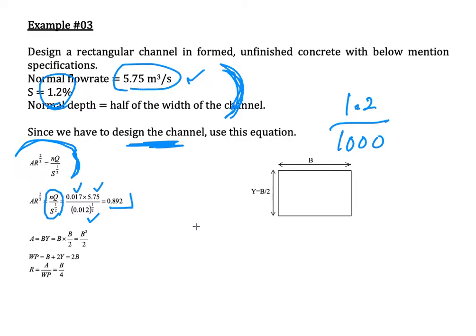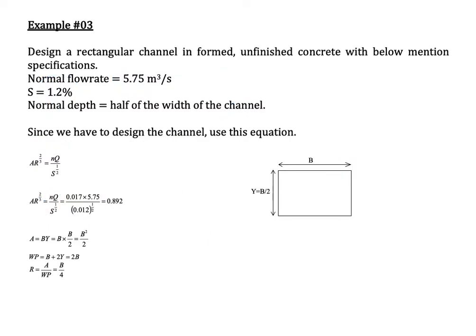From the problem statement, the normal depth is half the width of the channel. So if the channel width is b, the depth y equals b over 2. With this relationship, we can calculate the hydraulic radius.